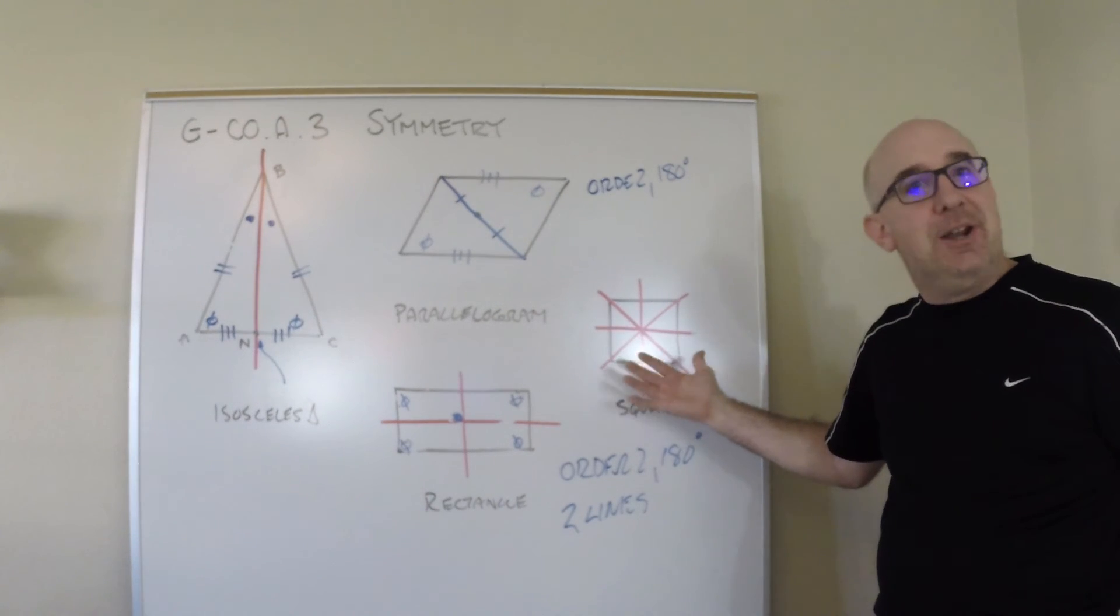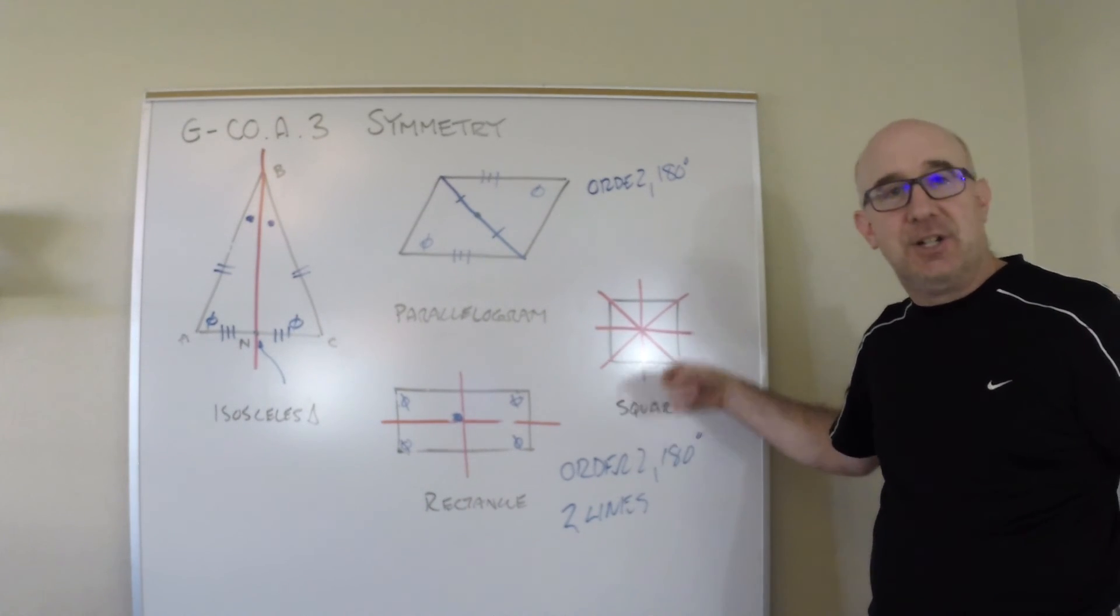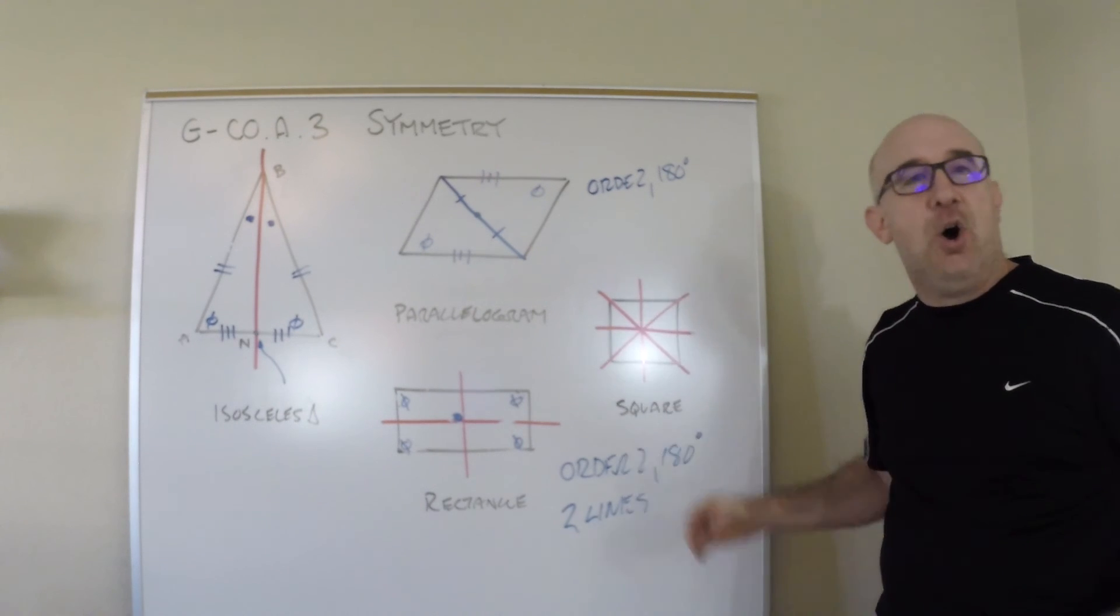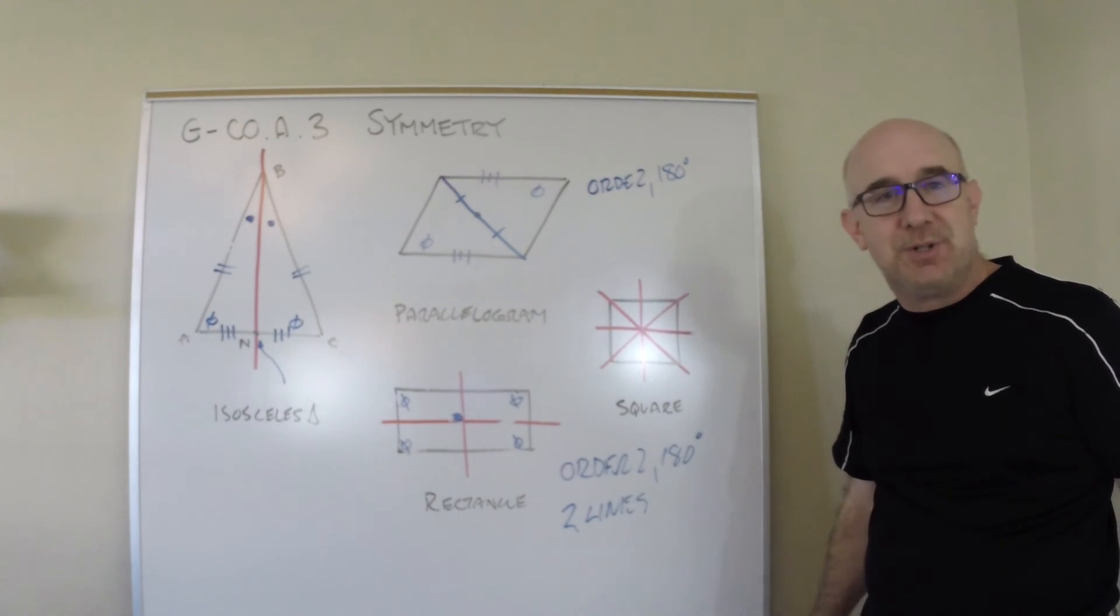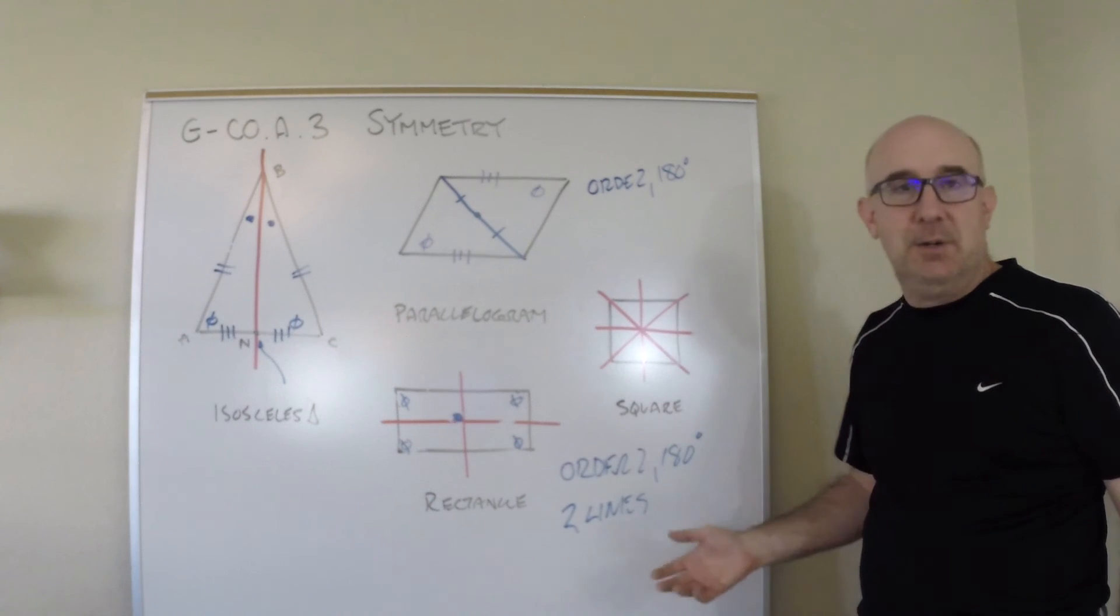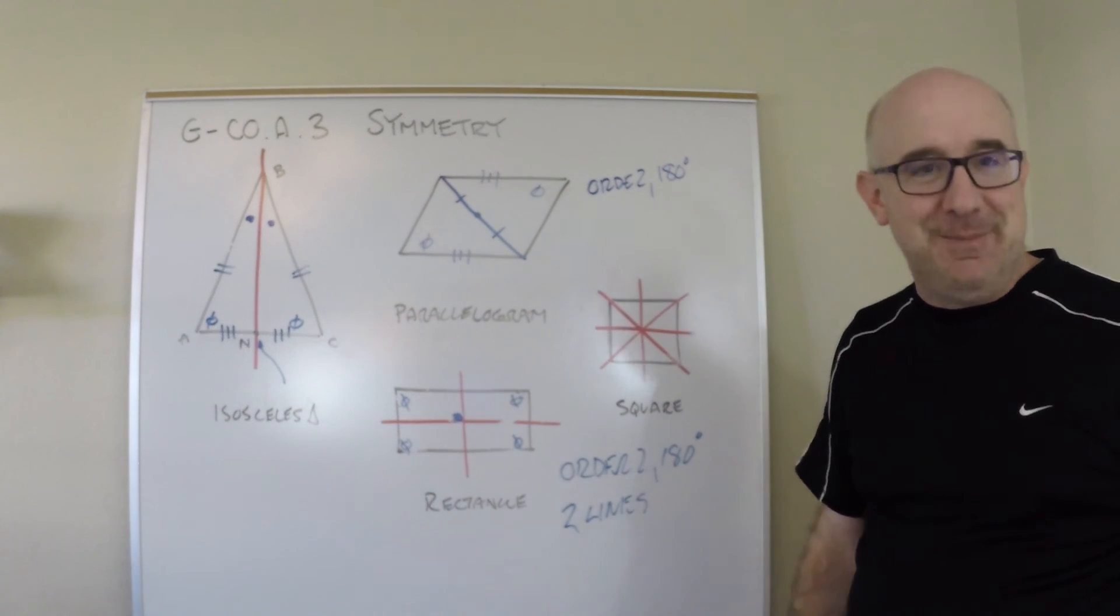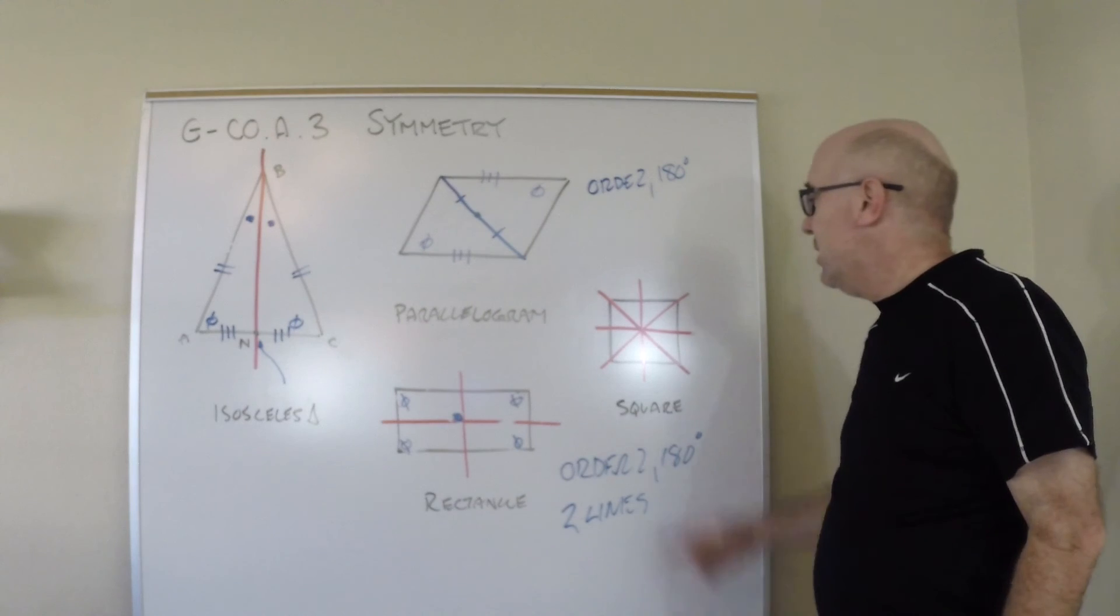That's also true in all even orders, actually. Four, six, eight, all of those would also produce a 180 degree rotation as a part of the symmetries in that group. The square I have up here for one reason.